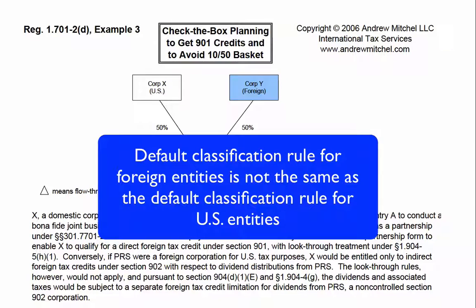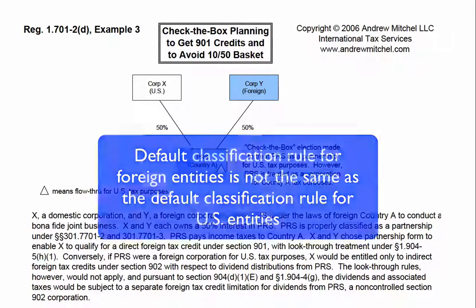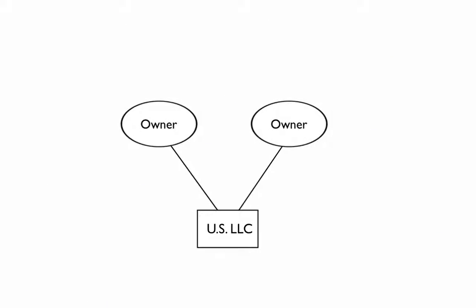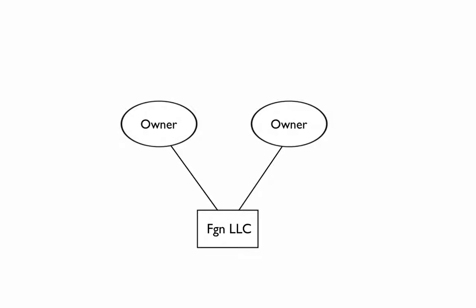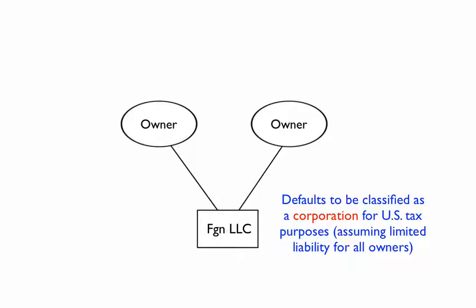Note that the default classification rule for foreign entities is not the same as the default classification rule for U.S. entities. U.S. LLCs with more than one owner default to be classified as partnerships with no need to make an entity classification election. Unfortunately, some domestic tax advisors who are not familiar with these rules believe that a foreign limited liability company will default to partnership classification, when in fact it defaults to be classified as a corporation.